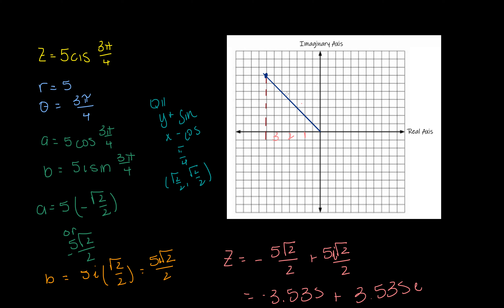Double-checking: 5 times √2 divided by 2 gives approximately 3.543. So we're looking at this point here, with the hypotenuse being 5, the horizontal measurement being negative 5√2/2, and the vertical measurement being 5√2/2. There we go — we converted from polar to rectangular form.